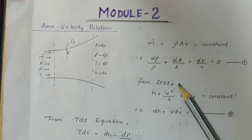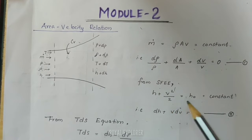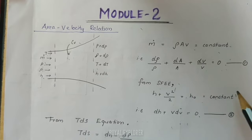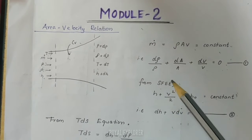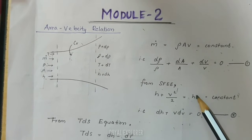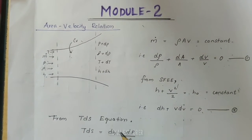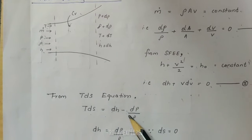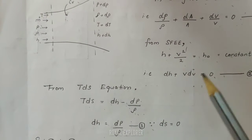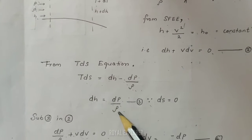From the steady flow energy equation: H plus V-squared by 2 equals H0, where H0 is constant. From the TDS equation: TdS equals dH minus dP by rho. For the isentropic case, dS equals 0, so dH equals dP by rho.